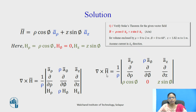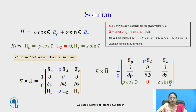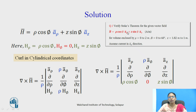I can now substitute these values into the curl equation. Curl h-bar equals 1/ρ times the determinant, with h_ρ replaced by ρ cosφ, h_φ replaced by 0, and h_z replaced by z sinφ. We have substituted the values for this particular question.